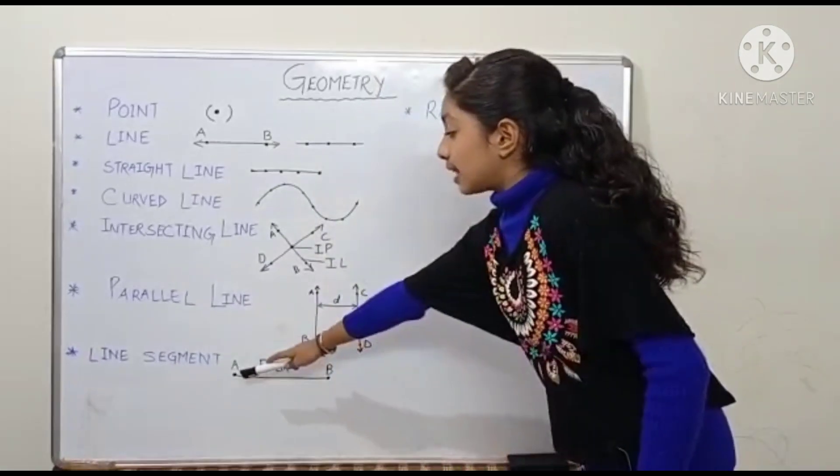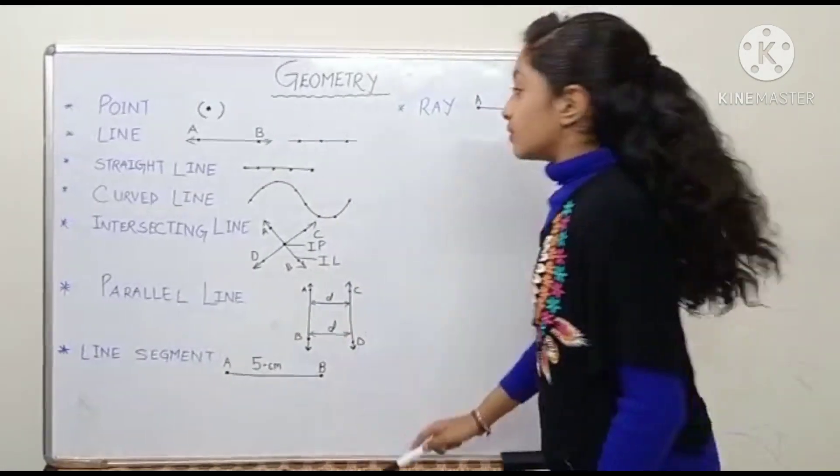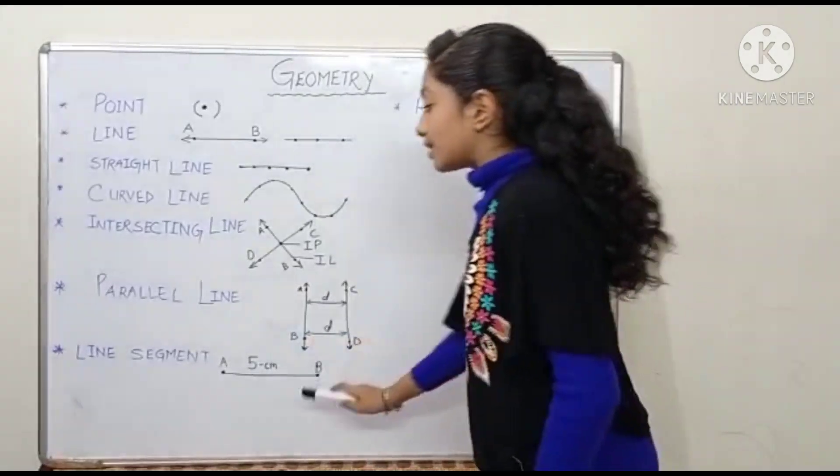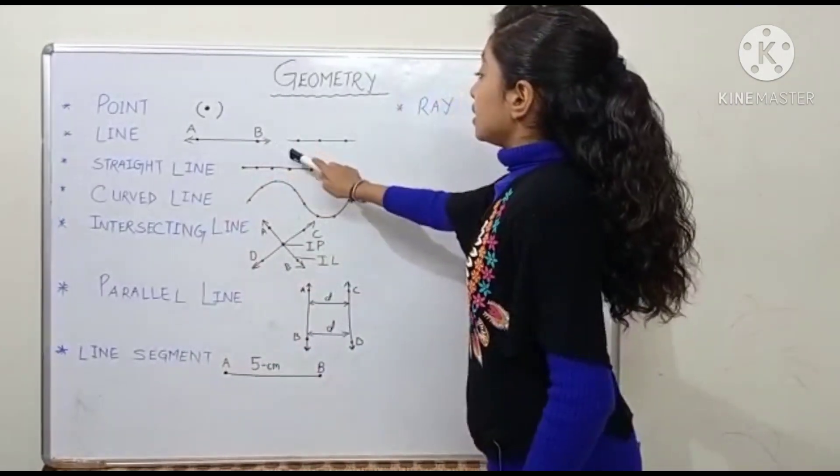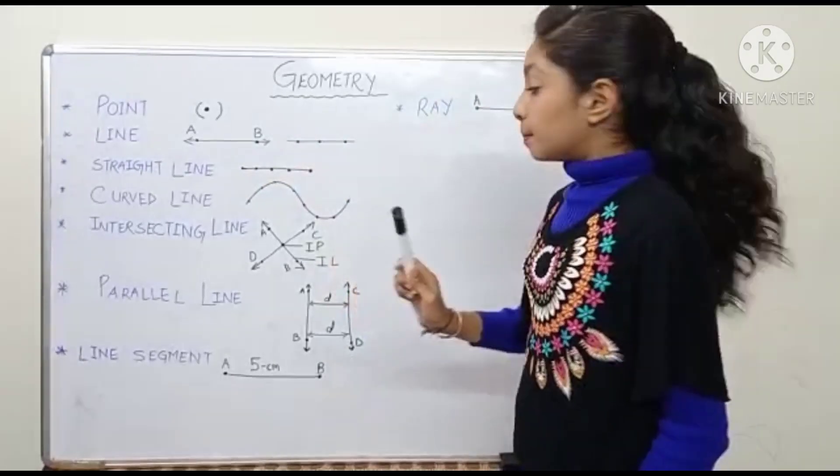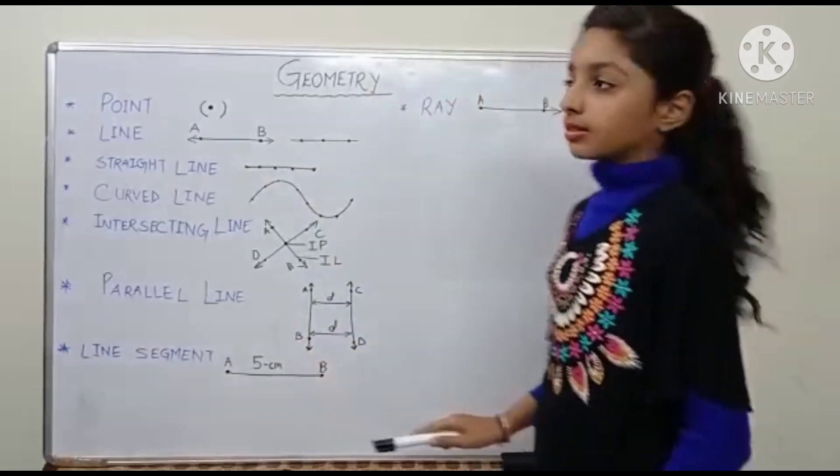Now, line segment. So a line segment is a line which has definite length. So that is a line segment. In line, we have read that line is indefinite but a line segment has a definite length.